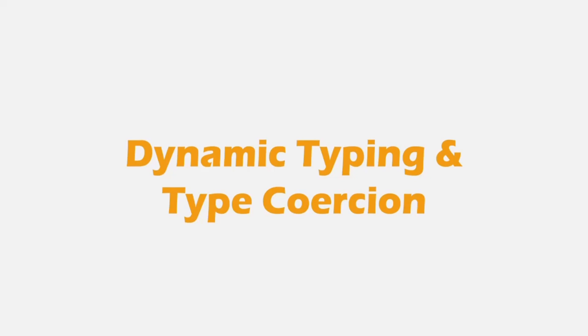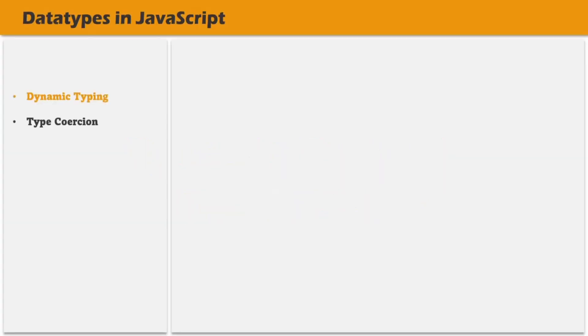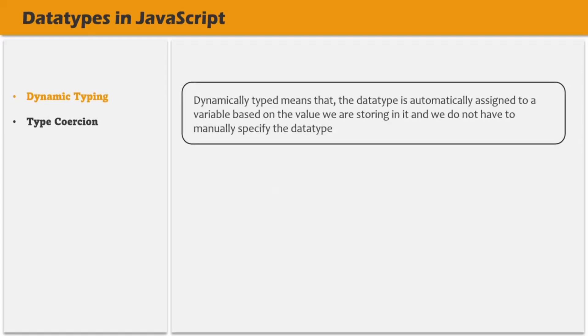In the last lecture, we learned about some of the data types in JavaScript like string, number, boolean, etc. Now, in JavaScript, a variable can be modified to store values of different data types. And that's why we say that JavaScript is dynamically typed. Dynamically typed means that the data type is automatically assigned to a variable based on the value we are storing in it, and we don't have to manually specify the data type. Let's try to understand it with a practical example.